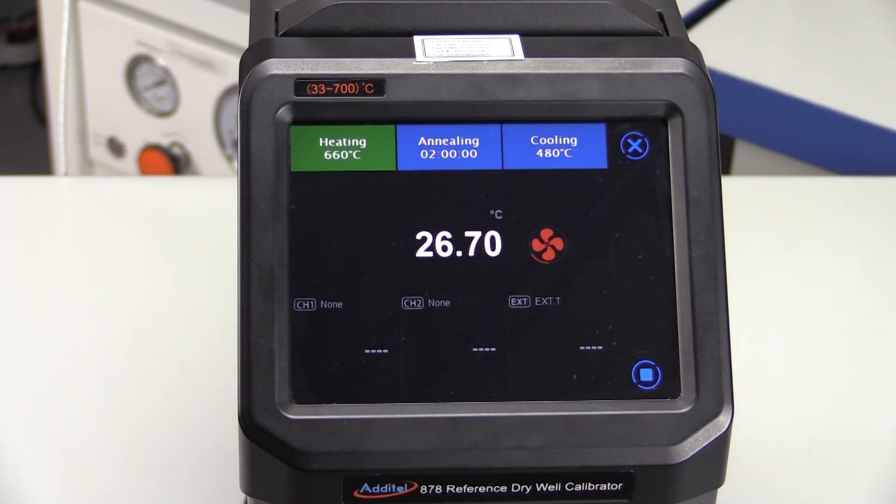In the first step of the automated process, the 878 will heat to 660 degrees C.